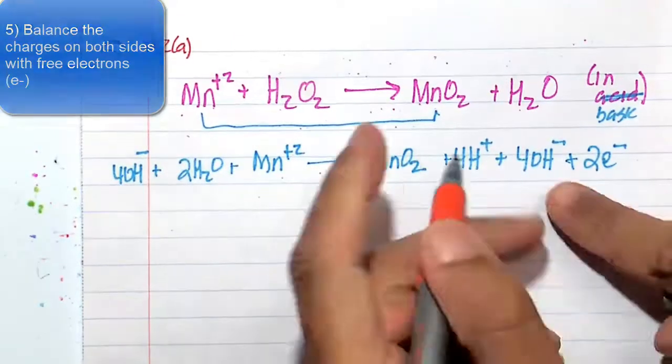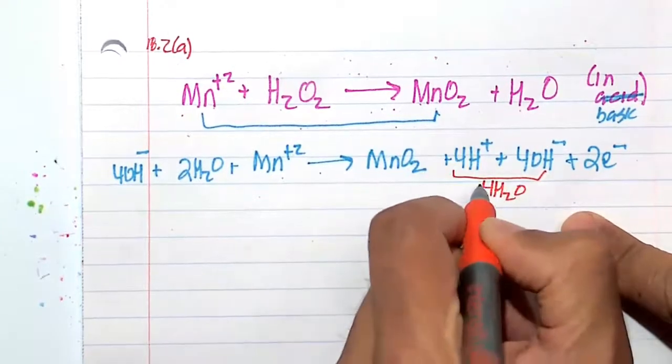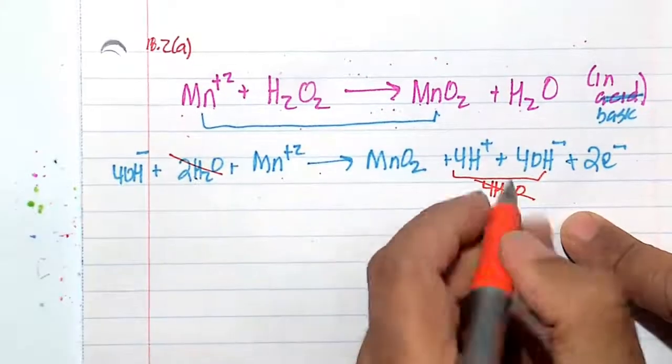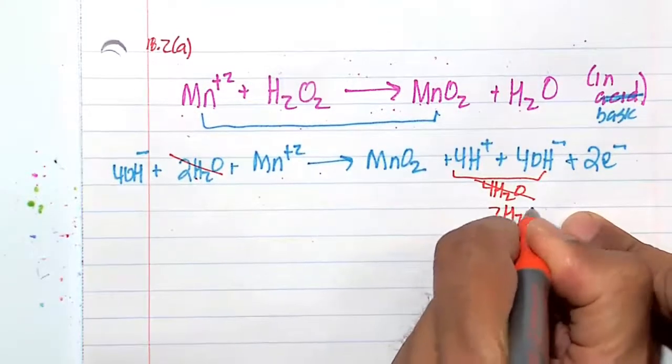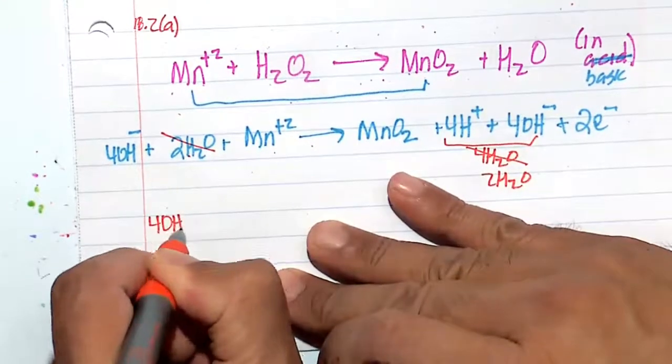Now 4H+ plus 4OH- is 4H2O. So out of these 4H2Os, 2 of them cancel out with the 2H2Os here, leaving me with 2 waters. So let's go ahead and write out this redox reaction.